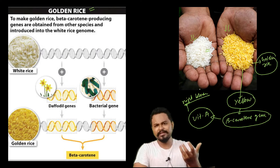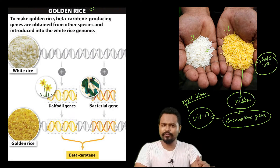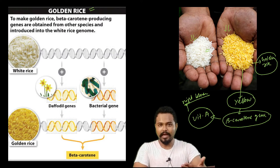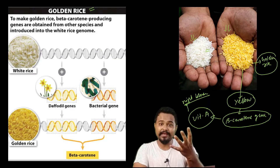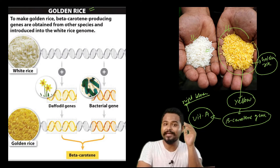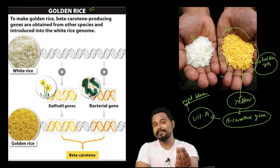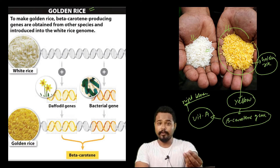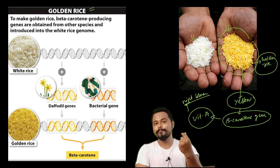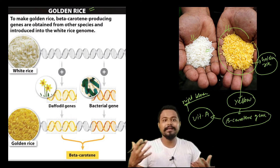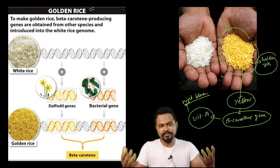Vitamin A deficiency disease is very common. Beta-carotene is a precursor to vitamin A, meaning the body converts beta-carotene into vitamin A.